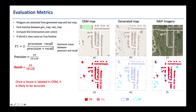As we know, the data labels are not accurate or complete, but we do notice that once a house is labeled, it is likely to be accurate. So we put the focus on the recall score, which is the percentage of labeled houses being detected by the model.